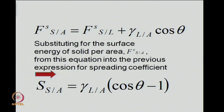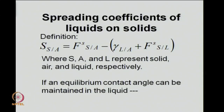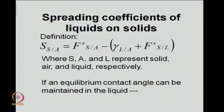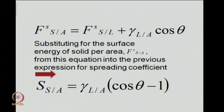Mentally you can run the parallel equations in terms of surface tensions. For solids, it is preferable to talk of surface free energies, so gamma_SA is replaced by FSAS and gamma_SL by FSLS. Substituting FSAS into the expression for the spreading coefficient, FSLS cancels, gamma_LA can be taken common, and we get SSA equal to gamma_LA times (cos theta minus 1).